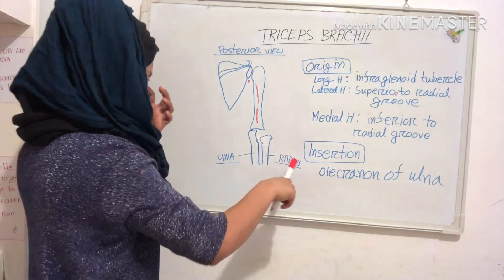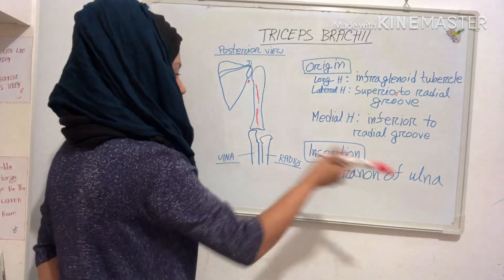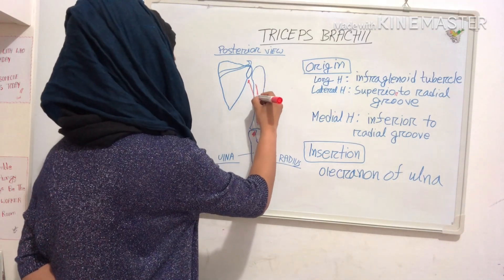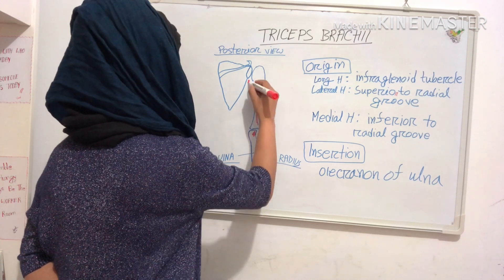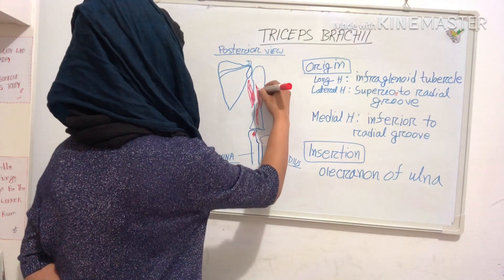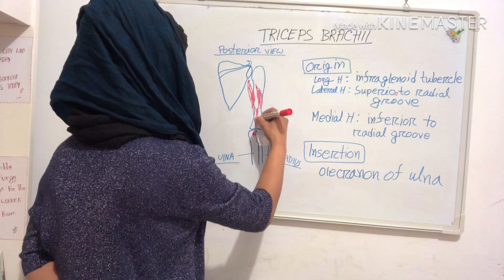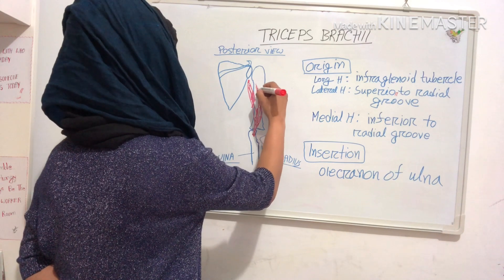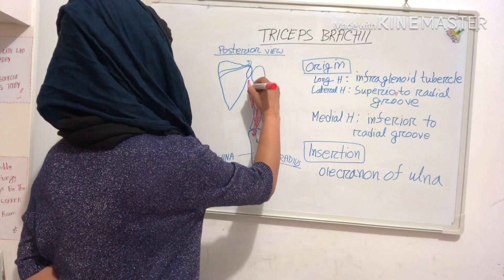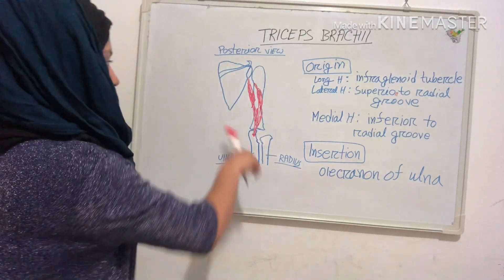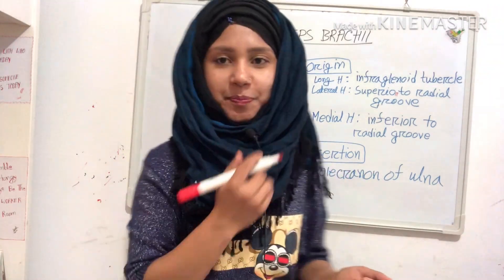Triceps brachii inserts into the olecranon process of the ulna — this is the olecranon process of the ulna. This muscle is supplied by the radial nerve.